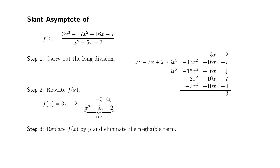then replace f of x by y. Then the equation of the slant asymptote is y equals, just this part, 3x minus 2. So this is the slant asymptote of this function f of x.